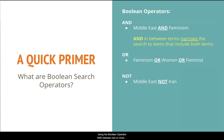Using the Boolean operator AND between two or more terms will require that each of those terms be found in each item in the results. This is great for combining different concepts that you know you want to include in the results. Using the operator AND also narrows the results since each keyword must be found in the item record.